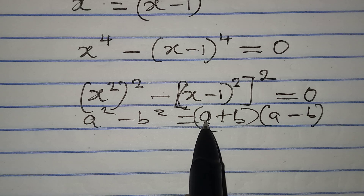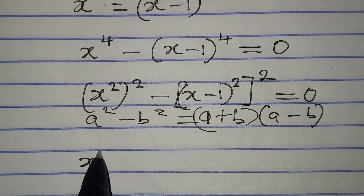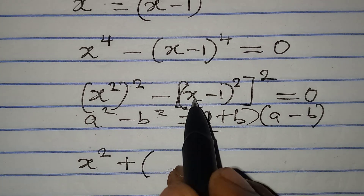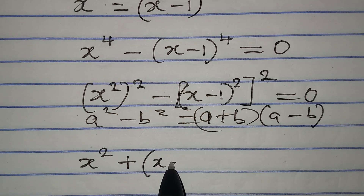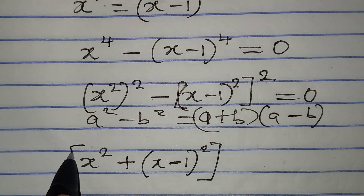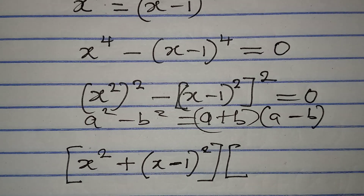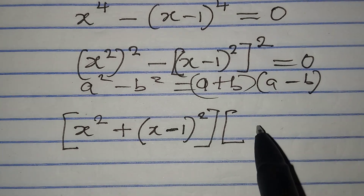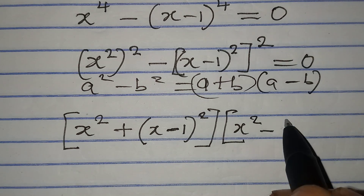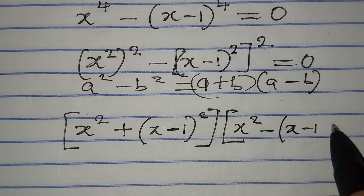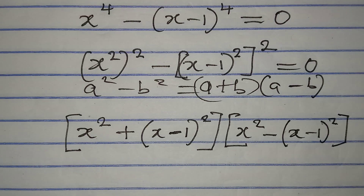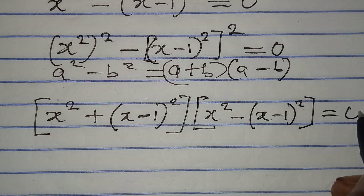In place of a I write x squared, and in place of b I open brackets and write (x minus 1) squared. Then for the a minus b part, I have x squared minus (x minus 1) squared. The whole of this expression is equal to 0.